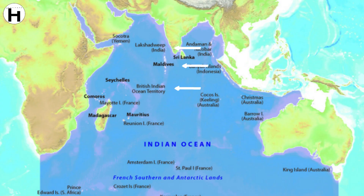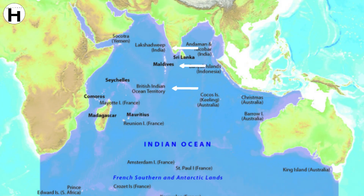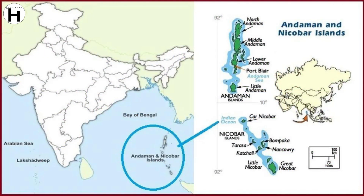In the western Indian Ocean, the Chagos-Lakshadweep Ridge is present, which includes the British Indian Ocean Territory, Maldives, and Lakshadweep Islands. On the eastern side of the Indian Ocean is Indonesia and the Andaman and Nicobar Islands. Let's study the eastern side first.